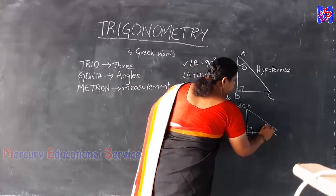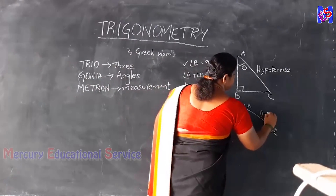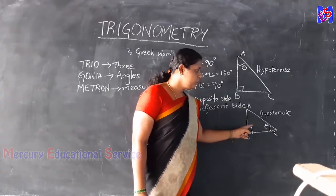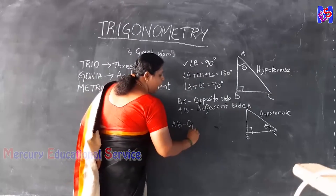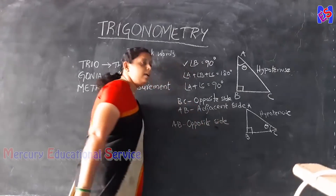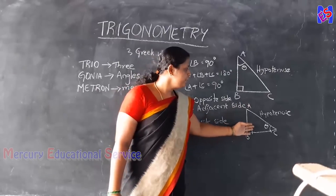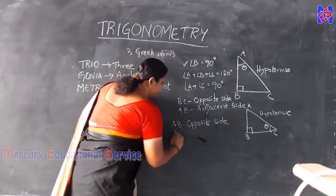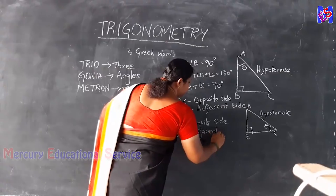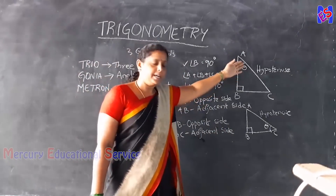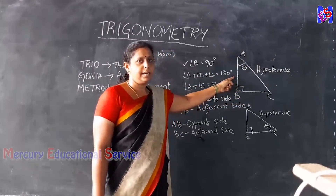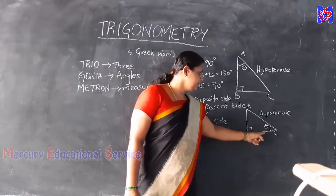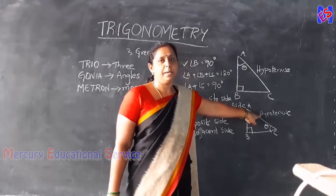Now let us take theta at C. The hypotenuse remains the same. The side opposite to theta at C is AB, so AB is the opposite side. The remaining side, BC, is called the adjacent side. In the first figure with theta at A, BC is the opposite side and AB is the adjacent side. In the second figure with theta at C, AB is the opposite side and BC is the adjacent side. In each triangle, the hypotenuse is the same.